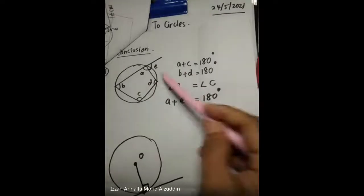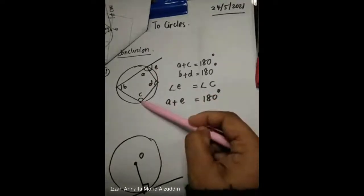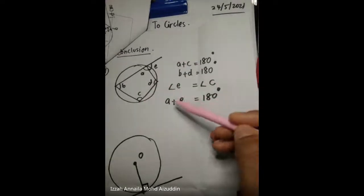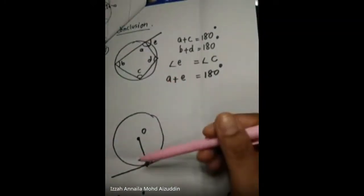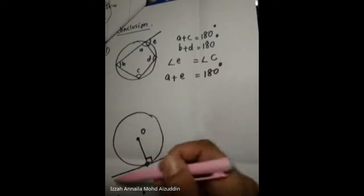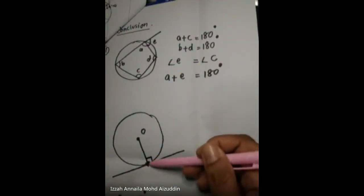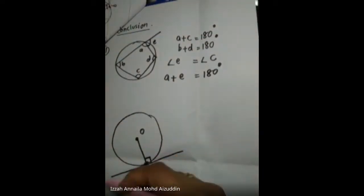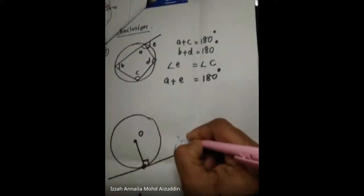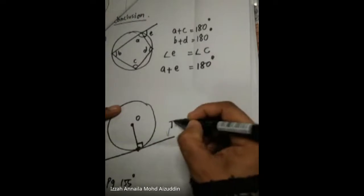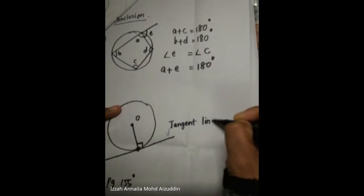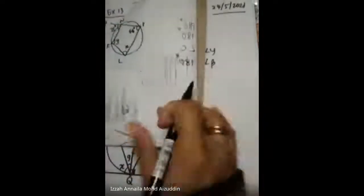So angle E equals angle C, and angle A plus E equals 180. That is the first property. The second property: if we have a circle and one line touches the circle at one point, this is called a tangent line. The angle between the radius and the tangent line is 90 degrees. That is the previous lesson.